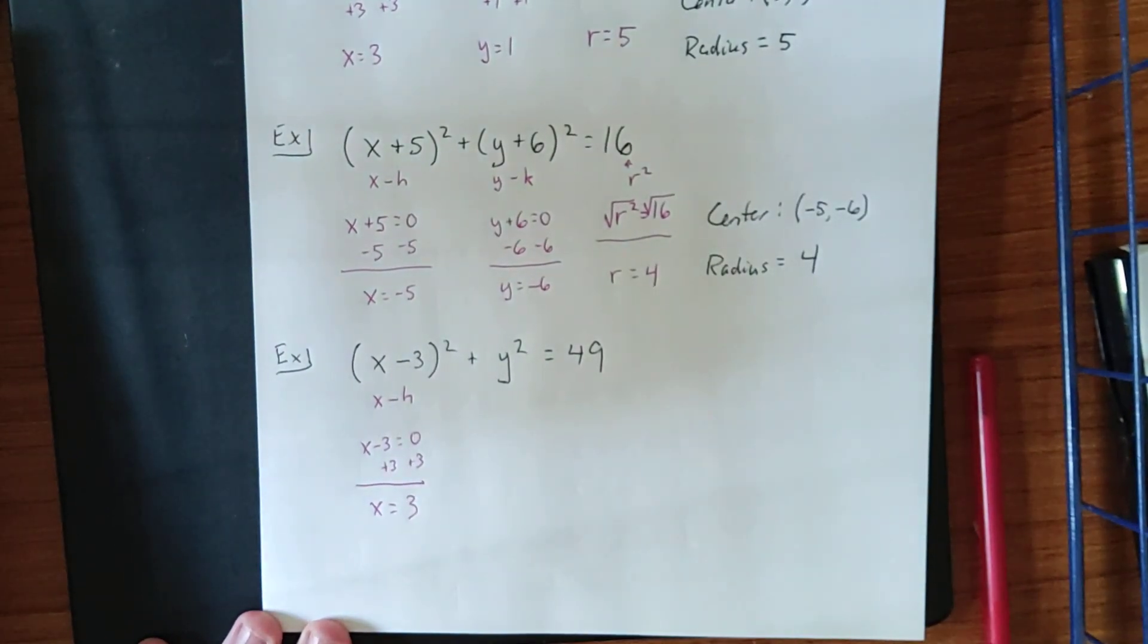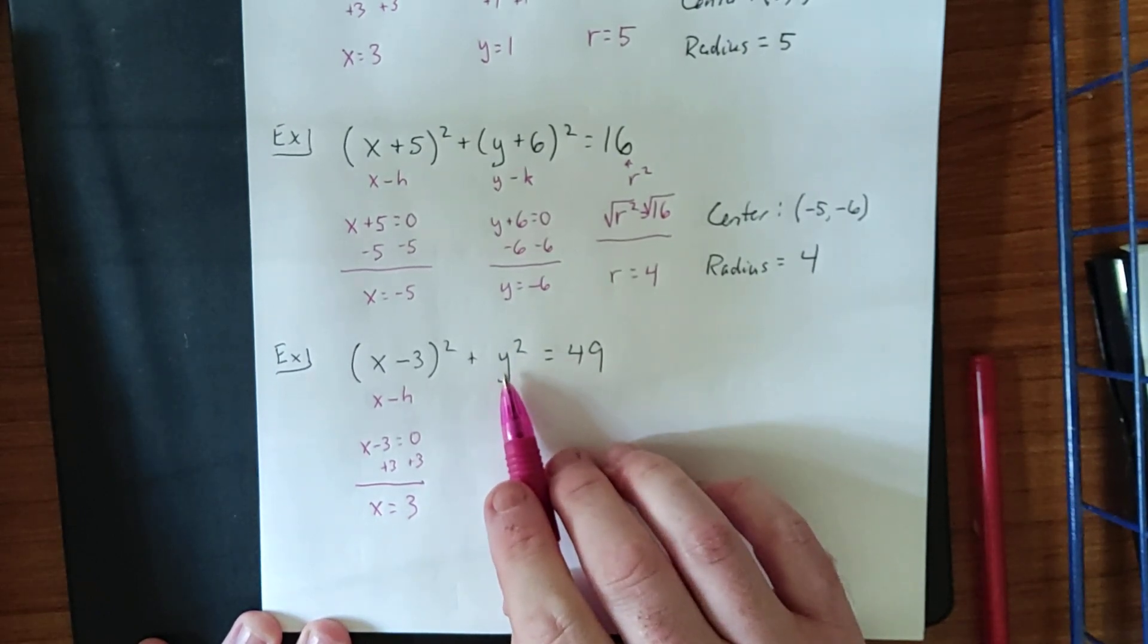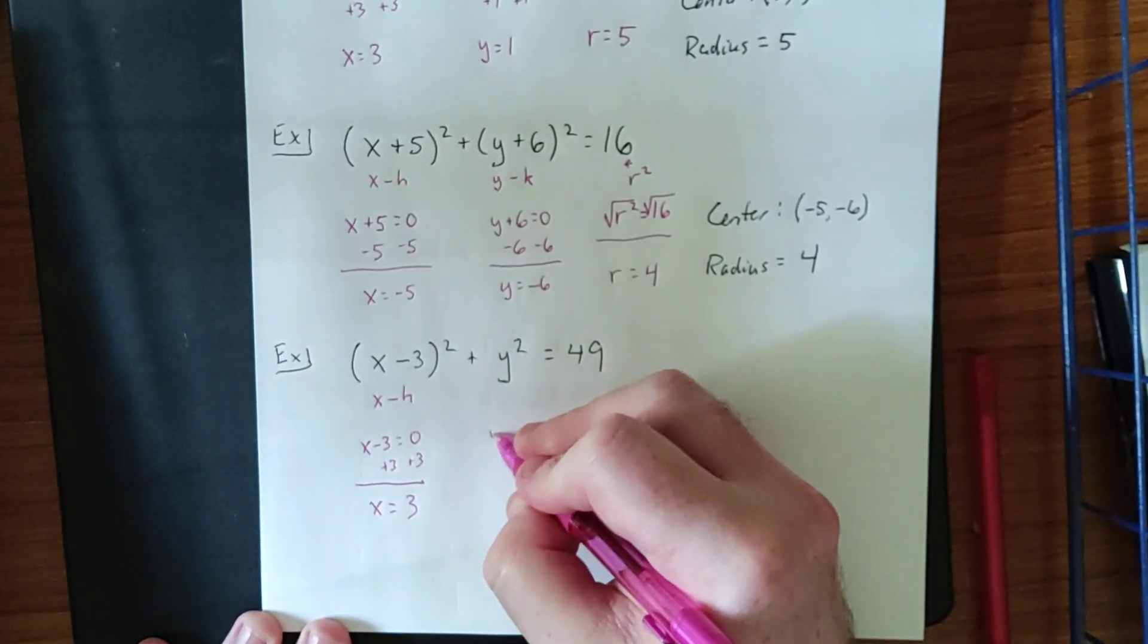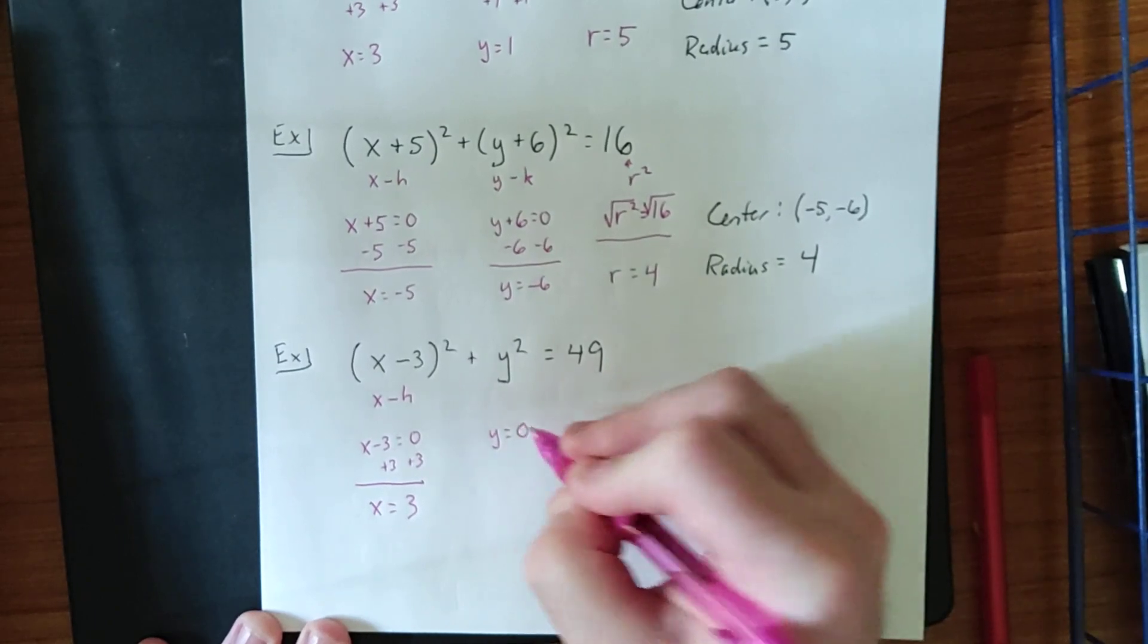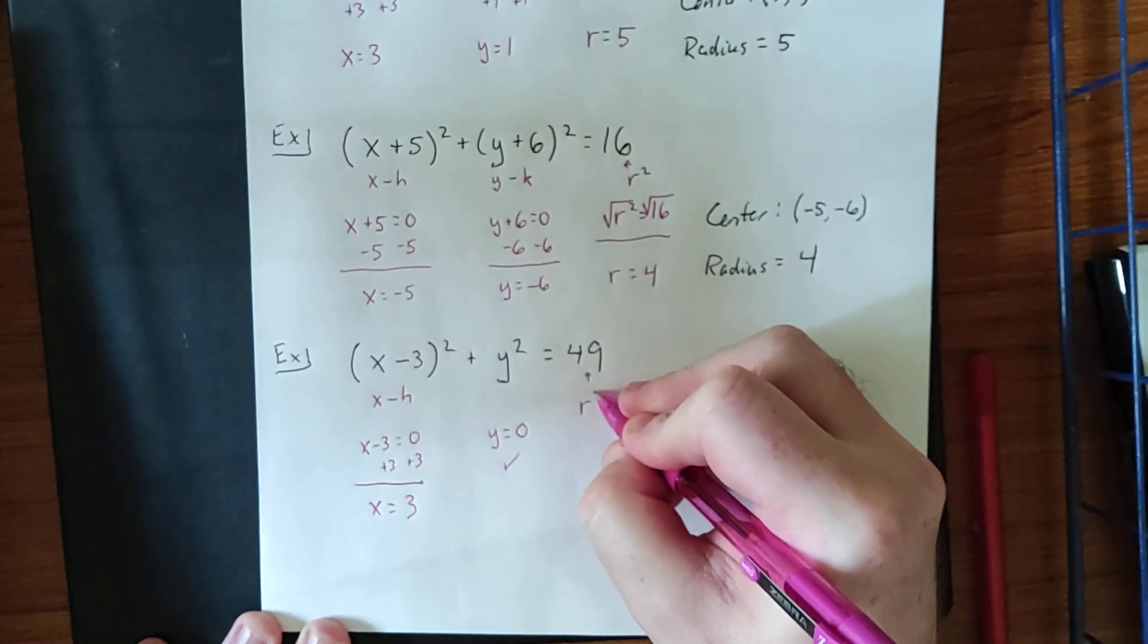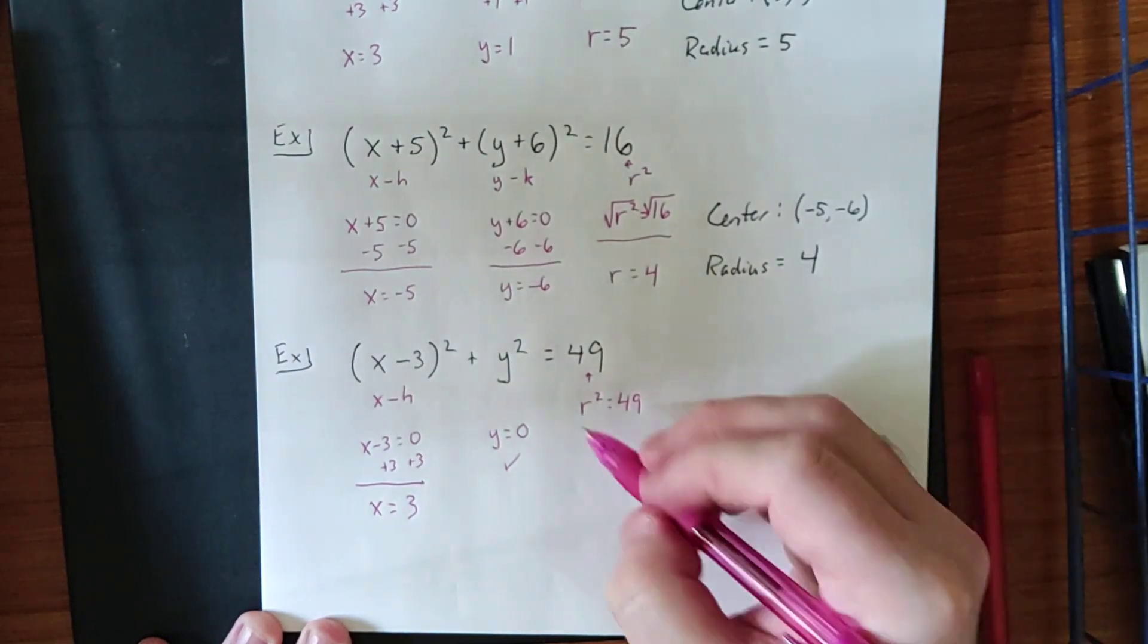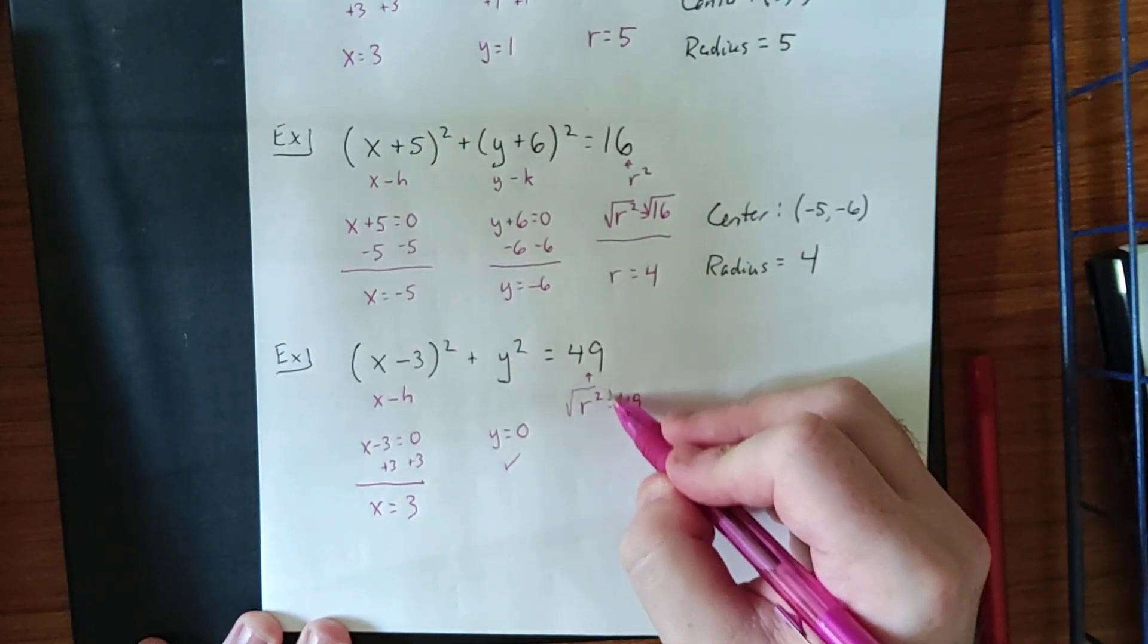We get that x is equal to 3. In the case that there is nothing being added or subtracted from the y before it's squared, this one actually turns out quite nicely. Ignoring the square, we would just get y is equal to 0, and there's no more algebra to do there. Finally, as far as the radius is concerned, r squared is equal to 49.